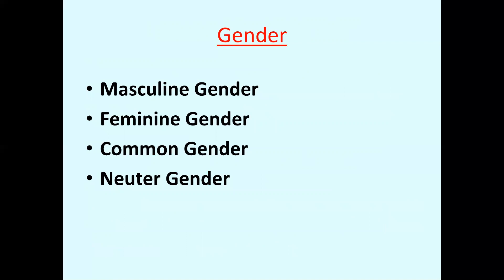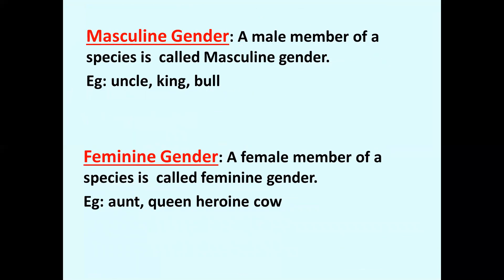Let us understand noun gender. There are four types of genders: masculine gender, feminine gender, common gender, and neuter gender. Masculine gender means a male member of a species — for example, uncle, king, bull. Whatever comes under a male category, we put them in masculine gender. Feminine gender means a female member of a species — for example, aunt, queen, heroine, cow.